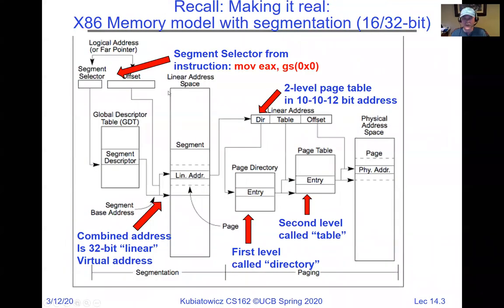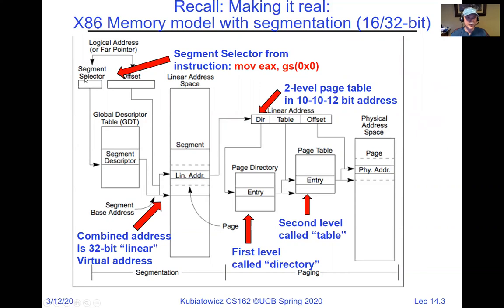Here is the 32-bit structure actually used on an x86 processor. The segment you're using comes from the instruction, and it's used to look up a segment selector, which has a 13-bit pointer to a segment plus a table ID. You grab the segment ID, the segment selector selects a descriptor, that descriptor becomes the base, we add the offset, and we get a linear address. That linear address is then used in the 10-10-12-bit address page table — exactly what's used in modern 32-bit architectures.